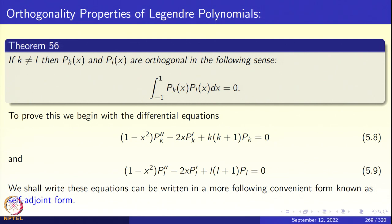Look at the slide, Theorem 56. If k is not equal to L, then the polynomials p_k(x) and p_L(x) are orthogonal in L2 of minus 1 to 1: the integral from minus 1 to 1 of p_k(x) p_L(x) dx is 0. Let us look at the proof of this orthogonality. We begin with the differential equations: p_k satisfies equation 5.8 and p_L satisfies equation 5.9. So we have 1 minus x squared p_k double prime minus 2x p_k prime plus k(k+1)p_k equals 0, and similarly for p_L with L(L+1).